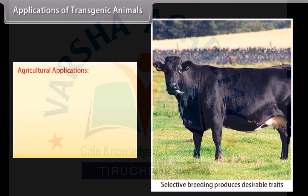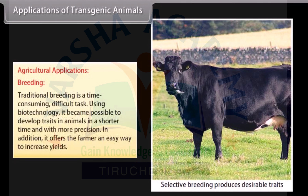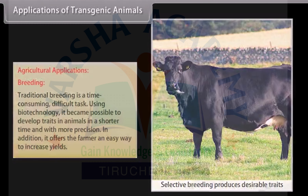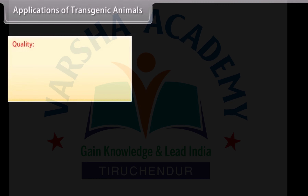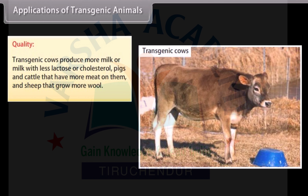Agricultural applications — Breeding: Traditional breeding is a time-consuming, difficult task. Using biotechnology, it became possible to develop traits in animals in a shorter time and with more precision. In addition, it offers the farmer an easy way to increase yields. Quality: Transgenic cows produce more milk, or milk with less lactose or cholesterol. Pigs and cattle that have more meat on them, and sheep that grow more wool.